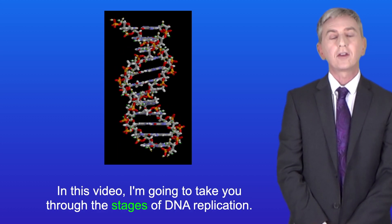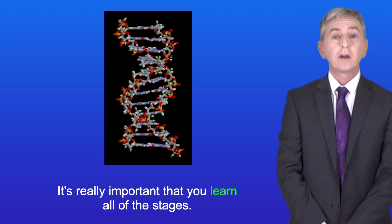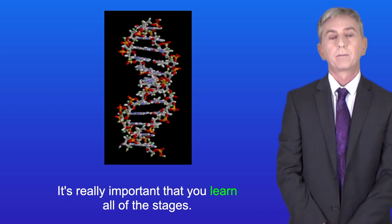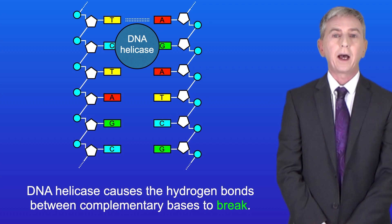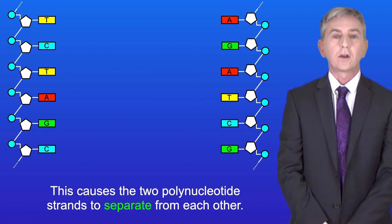In this video I'm going to take you through the stages of DNA replication and it's really important that you learn all the stages. In the first stage the enzyme DNA helicase attaches to the DNA molecule. DNA helicase causes the hydrogen bonds between complementary bases to break. This causes the two polynucleotide strands to separate from each other.